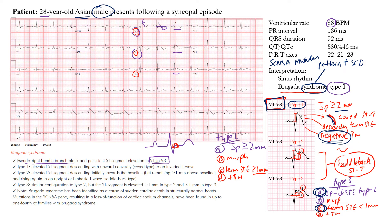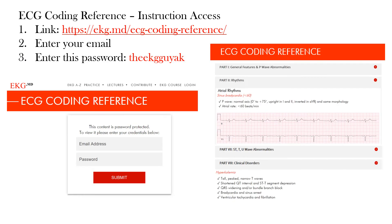We mentioned three different patterns, with type 1 being the most common — the one seen on this EKG. The findings in this interpretation: normal sinus rhythm and Brugada syndrome type 1.